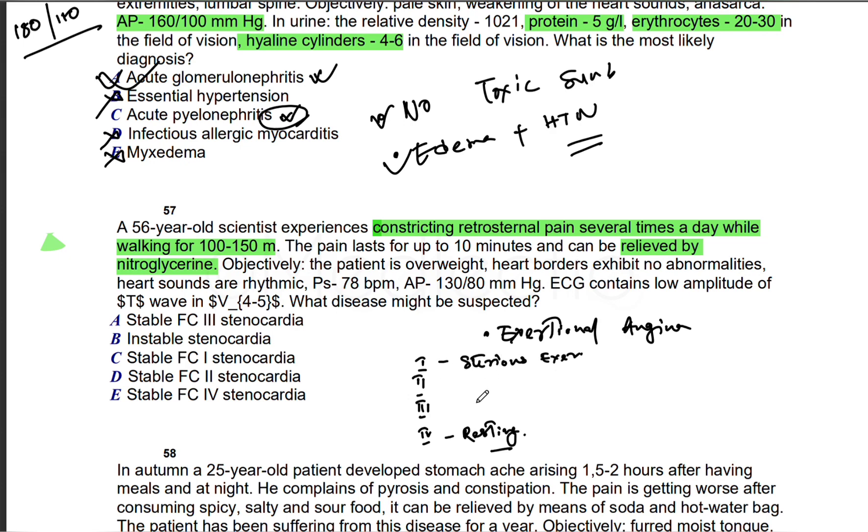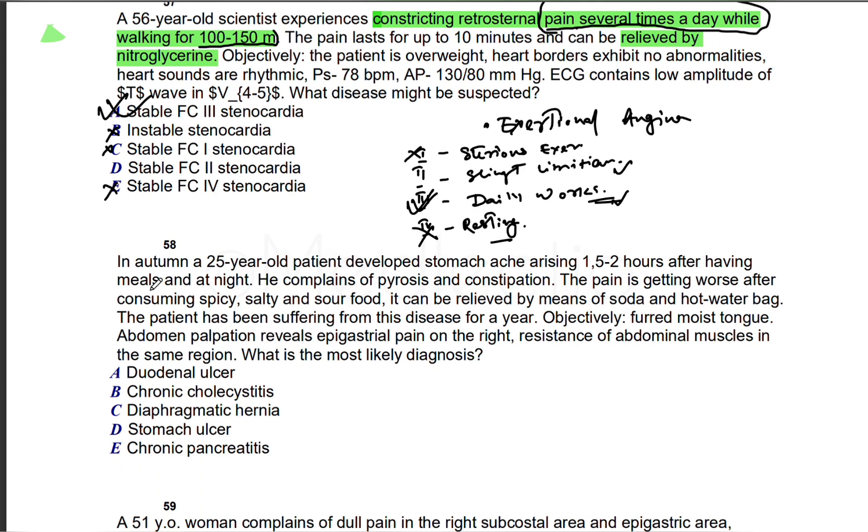There are four types. We've discussed this before. Type 4 is resting. Type 1 is heavy exercise or prolonged work—this is not the case. Left with two and three. Type 2 is slight limitation, Type 3 is daily work limitation. These two are more confusing. We can see several times a day, working for 100 to 150 meters. Not Type 1 or Type 4. If the patient has symptoms several times a day, he has daily work limitation, working only 100 to 150 meters. Pain several times a day—our answer is daily work limitation, Type 3.